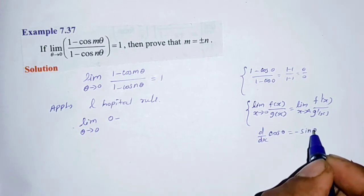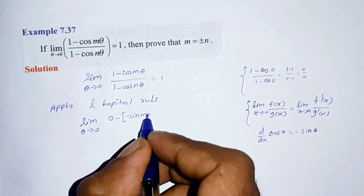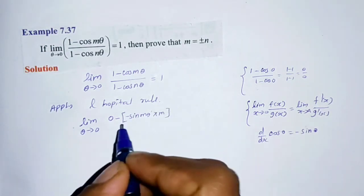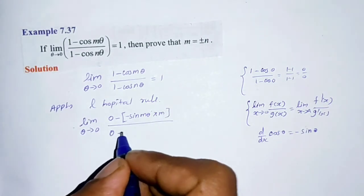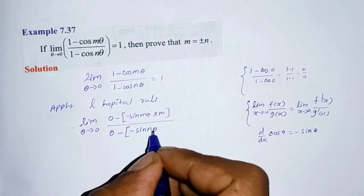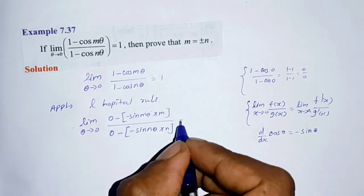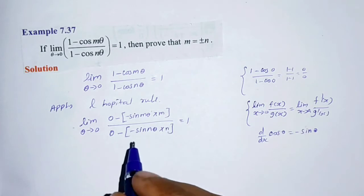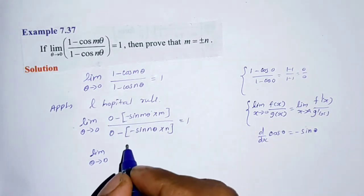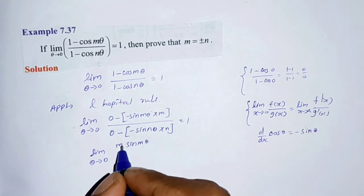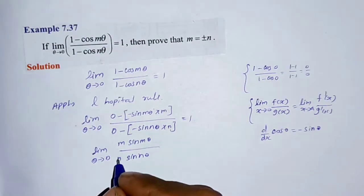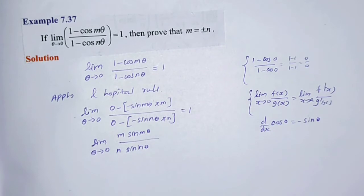Differentiating: the numerator 1 minus cos(m-theta) gives minus of minus sin(m-theta) times m, and the denominator 1 minus cos(n-theta) gives minus of minus sin(n-theta) times n. Simplifying the double negatives, we get sin(m-theta) times m divided by sin(n-theta) times n, equal to 1.